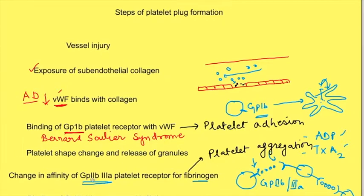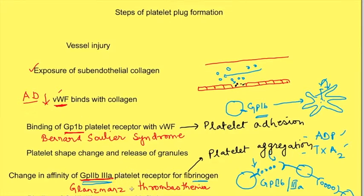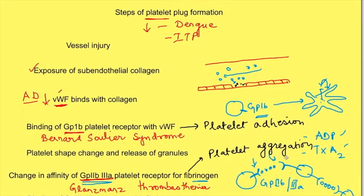Similarly, there is a disease with abnormal GP2B3A known as Glanzmann's thrombasthenia, in which platelet aggregation is impaired. All these conditions lead to bleeding disorders due to abnormal platelet plug formation. If the number of platelets is low — as occurs in infections like dengue or in idiopathic thrombocytopenic purpura — there will also be a problem in platelet plug formation.